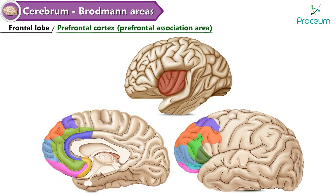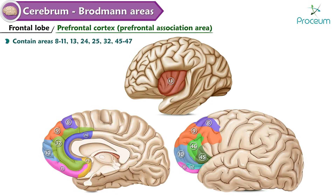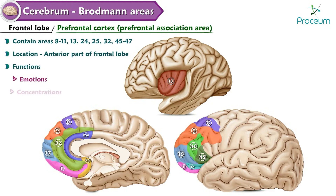Prefrontal cortex, also known as the prefrontal association area. Contains Brodmann areas 8 to 11, 13, 24, 25, 32, and 45 to 47. Location: anterior part of the frontal lobe. Functions: emotions, concentration, and attention.